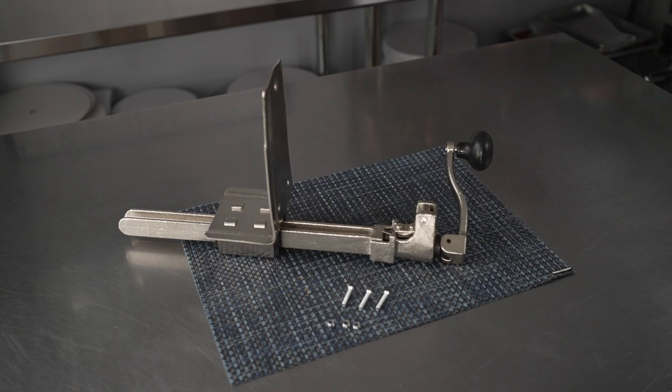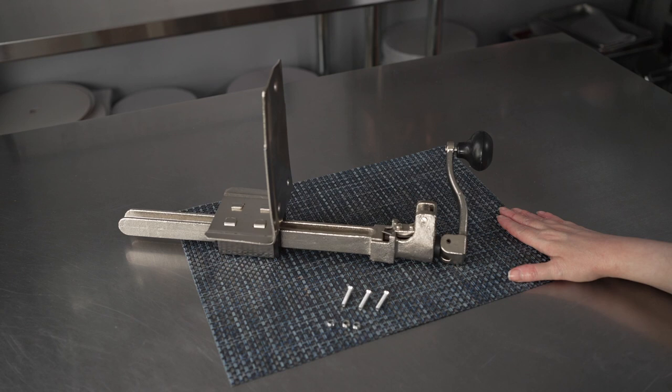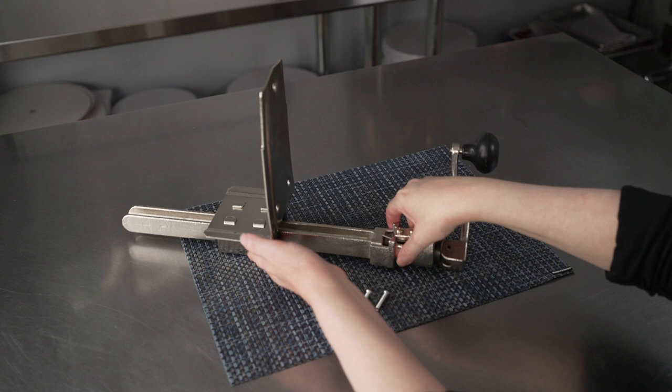It's a Metlux heavy-duty table-mounted can opener, and you can see we have it here on its side, and it's got this nice bracket that you're going to use to mount it to your table or countertop.